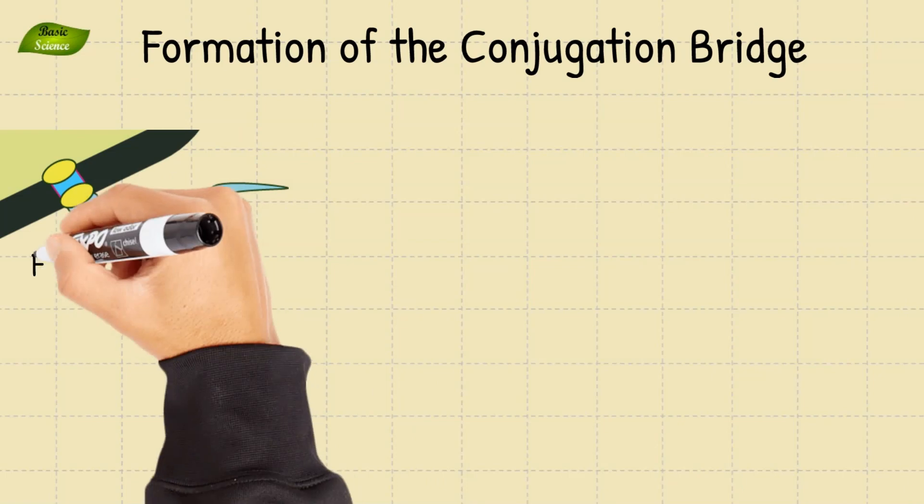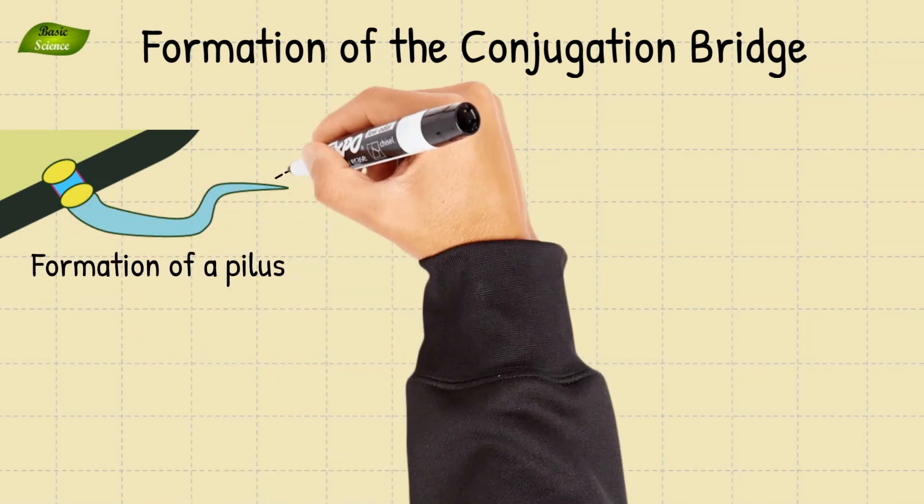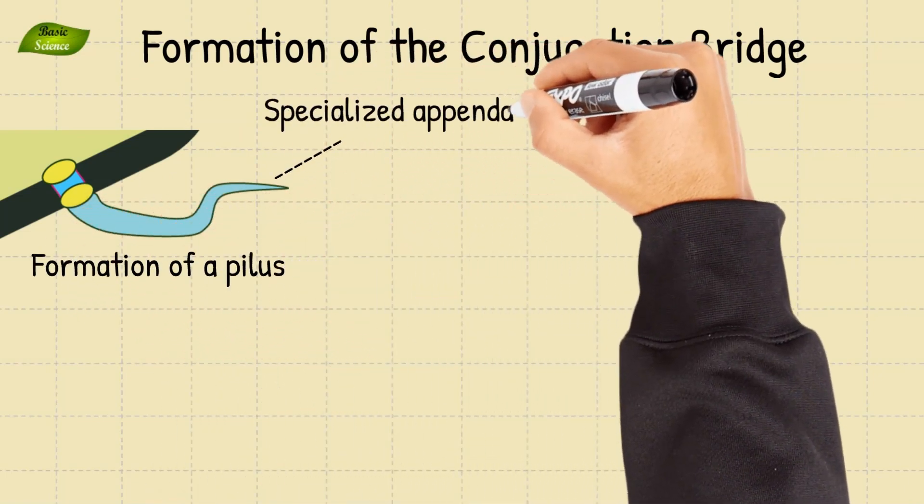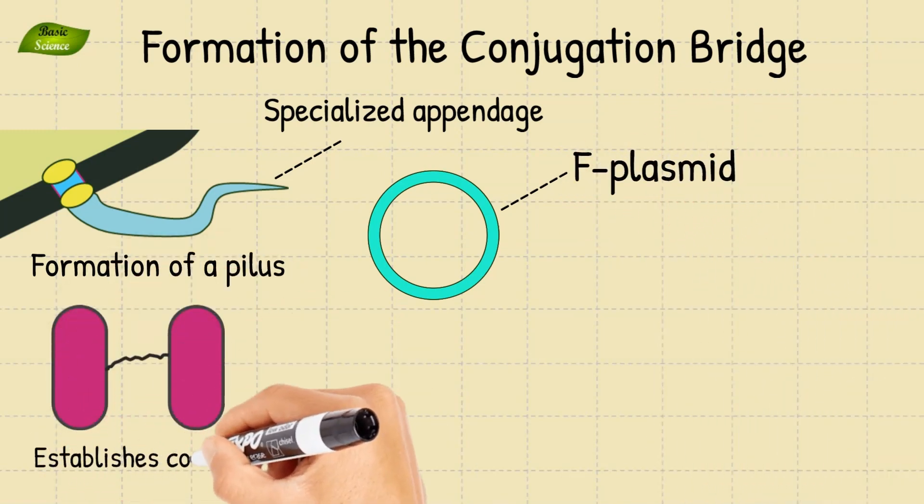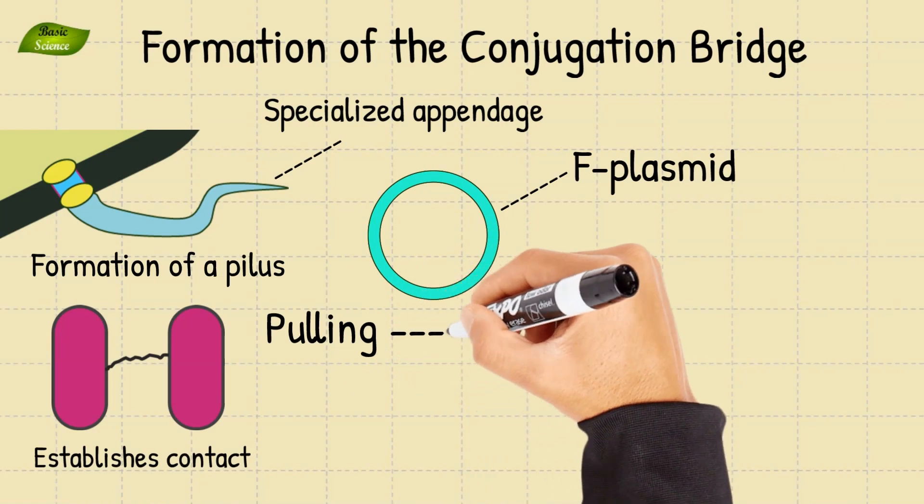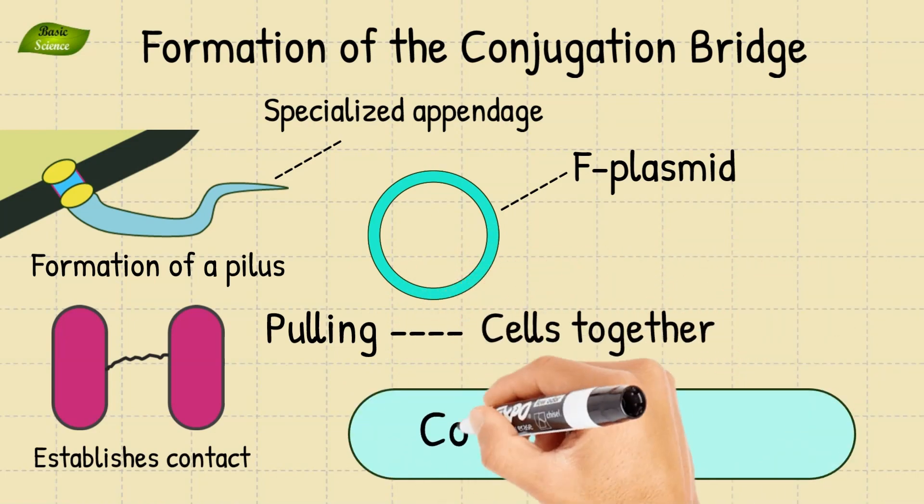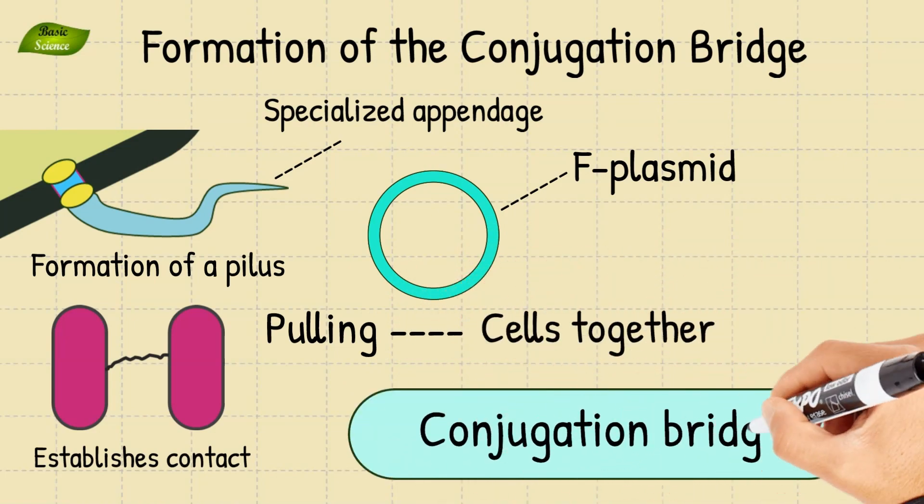The process initiates with the formation of a pilus, a specialized appendage encoded by the F plasmid. The pilus establishes contact with a potential recipient cell and retracts, putting the cells together to form a conjugation bridge.